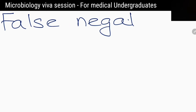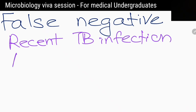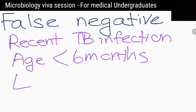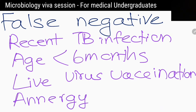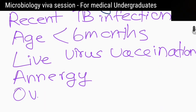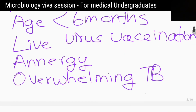What are the possible causes for false negative results in the Mantoux test? Recent tuberculosis infection, age less than 6 months, live virus vaccination, anergy, and overwhelming tuberculosis disease.